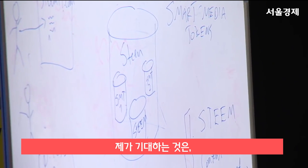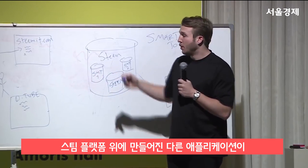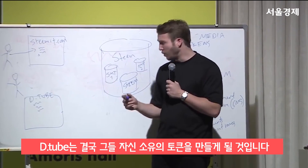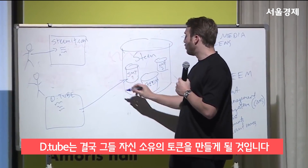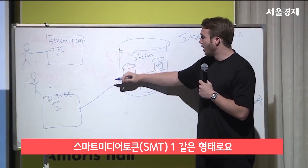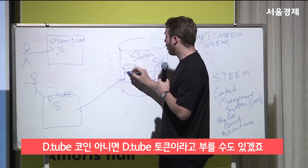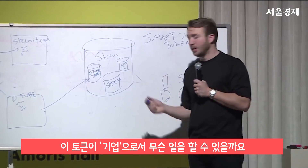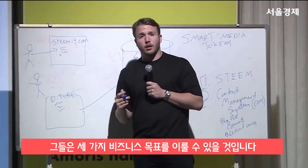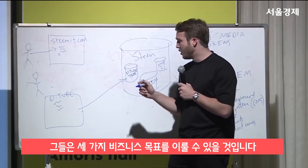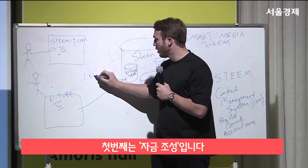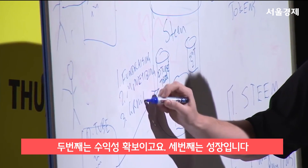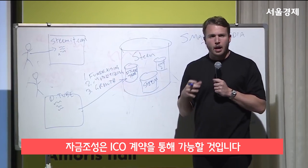What I expect is that other applications building on the Steem platform will begin to leverage their own tokens. So DTube, eventually in the future, will launch its own token like SMT1, but they might call it something different — they might call it DTube Coin or DTube Token. And what this token will allow them to do as a company is accomplish three business goals: fundraising, monetizing, and growth.